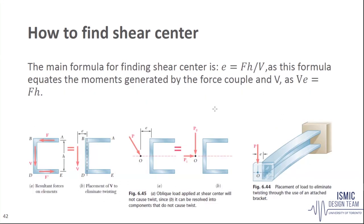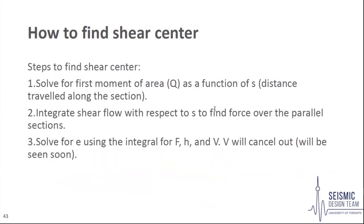The main formula for shear centre is E equals F multiplied by H over V, derived from the moment balance V times E equals F times H. For the first step, the first moment of area must be solved as a function of distance S along the section. Both t and y are constant, so only S is the variable. y is given by H divided by 2, and the first moment of area along length S is S multiplied by t multiplied by H divided by 2. V will cancel out as we'll see later.